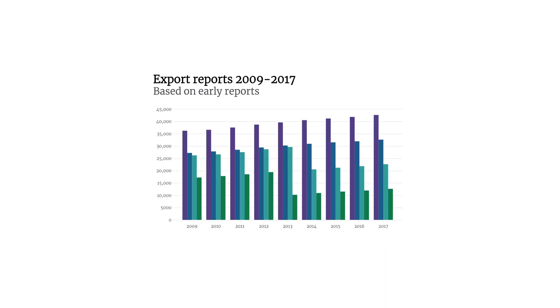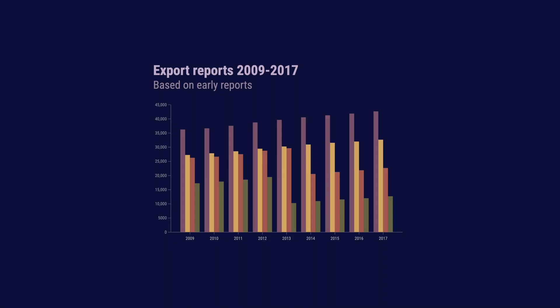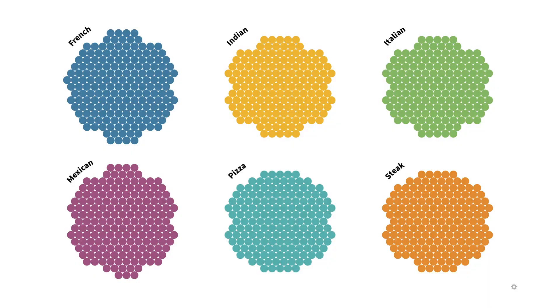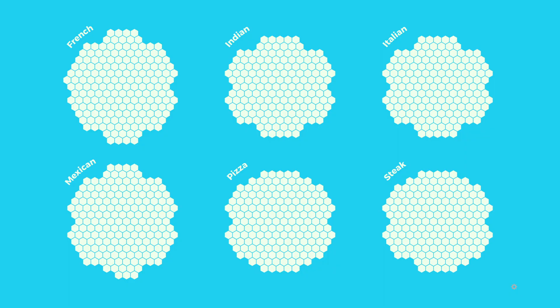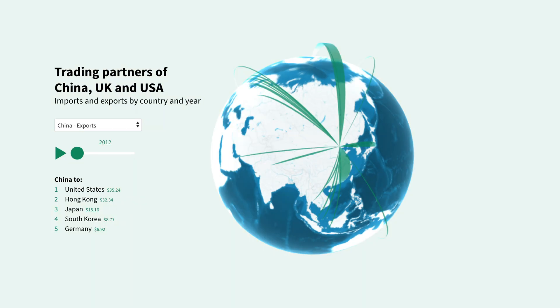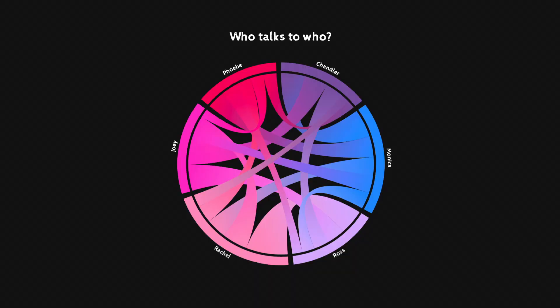And best of all, Flourish can be loaded up with your company color schemes, fonts, and logos, so everything you create will look as though it came from a design agency.